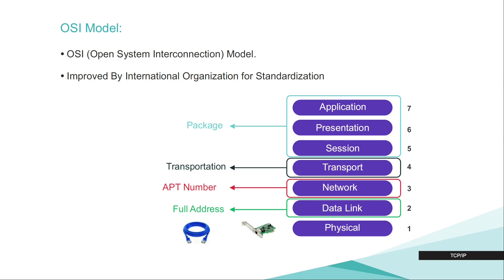OSI works like a postal service responsible for transmitting or delivering data from one device to another. We can think of the application, presentation, and session layers as the package itself. Transport is the transportation used to transmit data. The physical layer contains information about the physical components used — such as the NIC card (network interface card). If you are using a wired desktop, the internet wire connects to the NIC card, and the physical layer also contains information about the cable itself.